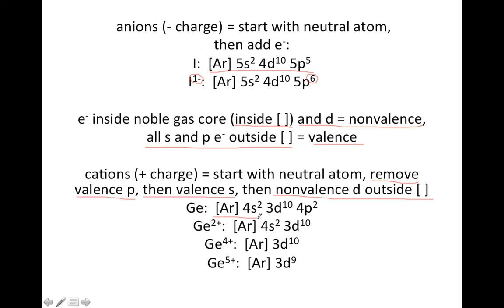So let's look at the element Ge. Here's the neutral Ge atom. If I want to make it 2+, I need to remove two electrons. Up above here, the first thing you remove is valence p, so I would get rid of these two. So here's Ge²⁺. Then if I want to make it 4+, I need to remove two more electrons.